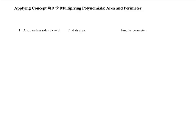Area and perimeter — you need to know what those mean. Area is basically how much space fits inside a shape. For a rectangle, you do length times width. For a square, the sides are the same, so the formula is s squared — which is the same as side times side.